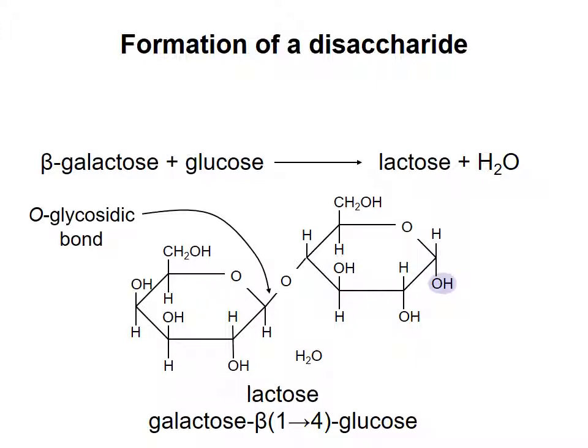If the hydroxyl on the anomeric carbon of glucose is on the opposite side of the pyranose ring from the highest numbered carbon in glucose, the molecule is alpha-lactose.